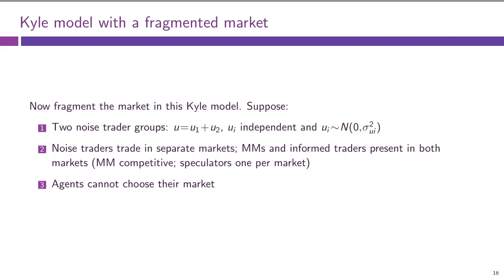Let us get back to our Kyle model with fragmented markets. How do we set it up? Say that now instead of one market, we just have two markets. In each market we have a dealer who is still competitive. In each market we also have one insider who knows exactly what the asset value V is. But we split our noise traders into two, splitting order flow U from noise traders into U1 and U2, and we say that those are independent.